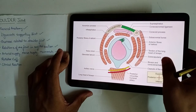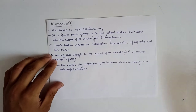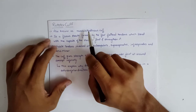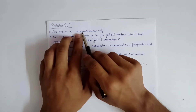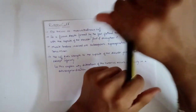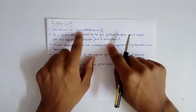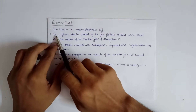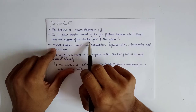By revising this topic once again we can understand rotator cuff more easily. Starting with rotator cuff, also known as musculotendinous cuff. The word 'musculotendinous' means muscle and tendon, and 'cuff' stands for cuff and collar. It is a fibrous sheath formed by 4 flattened tendons which blend with the capsule of the shoulder joint and strengthen it.